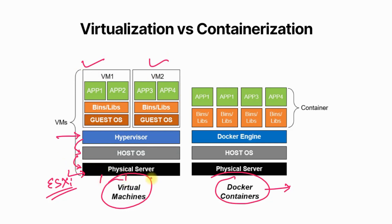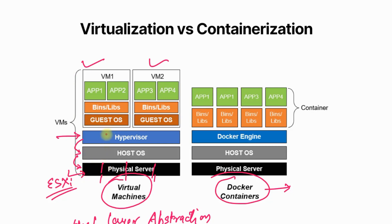The hypervisor helps us to abstract the physical box into virtual machines, which are built out of the resources available on the physical host. This abstraction is at the host level — a host-layer abstraction. We divide the host into chunks of VMs, and on each VM we can run an OS, libraries, dependencies, and our application. This is how virtualization works.